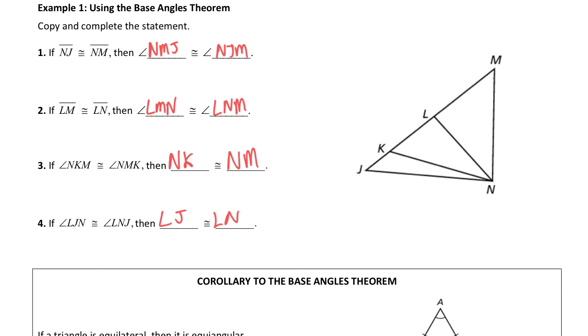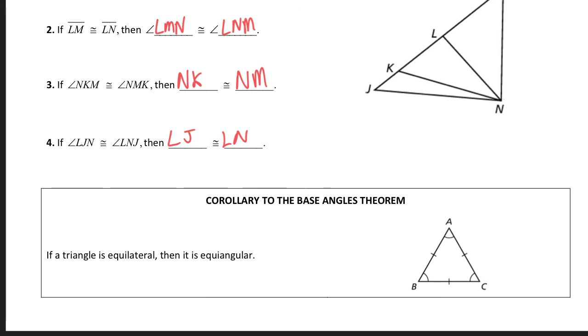So that's why LN and LJ would be congruent in that situation. So moving ahead, talking about the base angles theorem, kind of playing off of that.